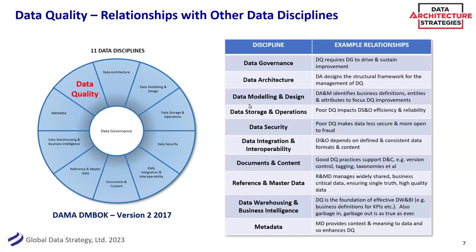Just to mention a few: data security — if your data is of poor quality, your data becomes less secure and more open to fraud. It's much easier for people to create false accounts if you can't link accounts back to customers. Reference and master data depends heavily on good data quality as its base. Data warehousing and BI — the first thing I ever learned in data management is garbage in, garbage out. It's as true today as it ever was, probably more true today. Data quality is a discipline in its own right, but in order to deliver data quality, other disciplines need to be considered as well — things like architecture and governance in particular, which are huge enablers.